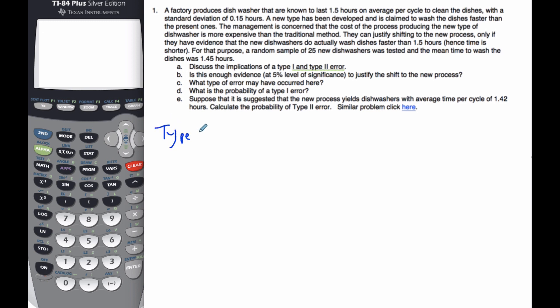Well, the type 1 error, that's if we reject the null hypothesis, which would mean that we say that the dishwashers are actually more efficient, when in fact they are not. And so the implications of that is they spend money on the new dishwashers, on the new process, and advertise that it's faster, advertise faster times, yet it is not true. So they spend money on the process of making these dishwashers, not true.